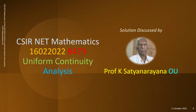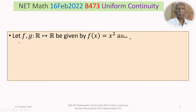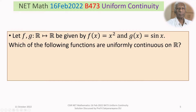We now discuss the solution of a problem from the section analysis, based on the concept of uniform continuity of functions. This question appeared in the CSIR National Eligibility Test held on 16 February 2022, from section B. The problem is: let f and g be two functions defined from the set of real numbers into itself, where f(x) = x² and g(x) = sin x. Which of the following functions are uniformly continuous on R?